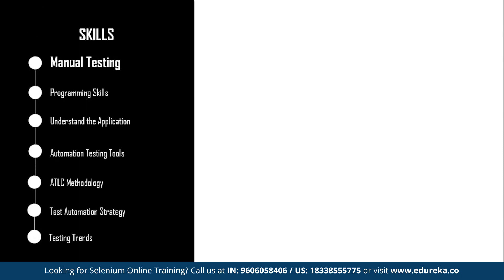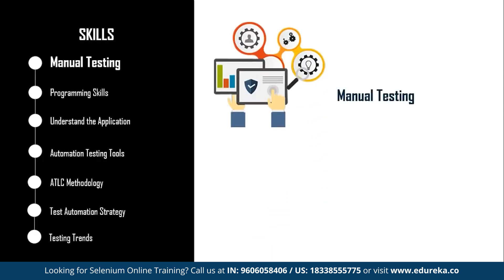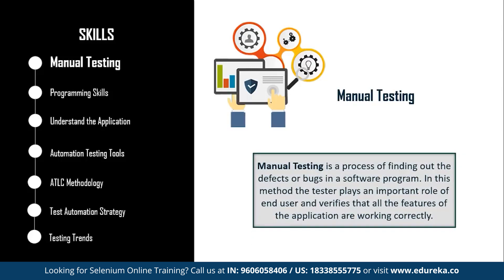Here are the 7 most important steps to becoming a test automation engineer, which will also help if you are planning to switch your career to automated testing. The first step is manual testing. While companies are moving towards codeless automated testing tools, it is highly important to focus on manual testing concepts initially. Manual testing is a process of finding defects or bugs in a software program where the tester plays the role of end user and verifies that all features work correctly. This makes it clear that automation testing is for experienced manual testers.